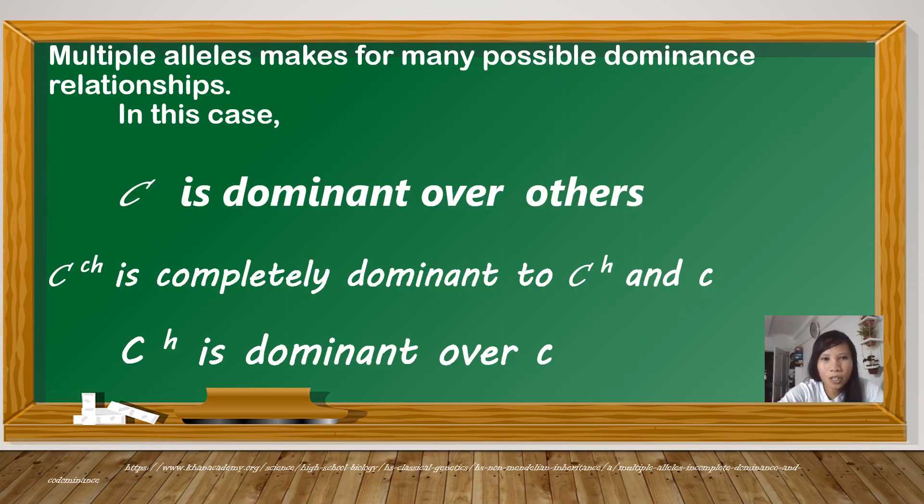Before we proceed to the problem solving, let us first have some simple reminders. Multiple alleles makes for many possible dominance relationships. In this case, C, the allele for black is dominant over others. What does it mean? Of all the coat colors we discussed, the strongest and most dominant is the trait for black color.